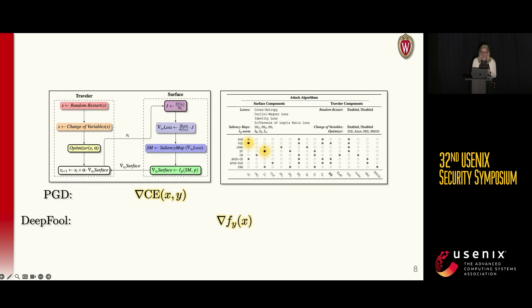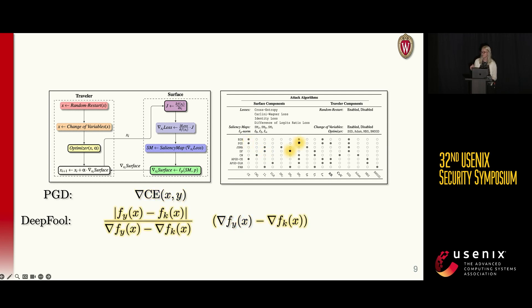Back to our PGD and DeepFool example. Beginning in the surface with the loss component, we see that PGD opts for the categorical cross-entropy loss and takes its gradients from the output of this loss function. DeepFool, on the other hand, doesn't use an explicit loss function, so we say that it optimizes over the identity loss. Instead, it takes the Y-truth component of the model Jacobian and operates on that directly. Moving down into the saliency map component in the surface, we see that PGD doesn't apply any special heuristics and just operates on its categorical cross-entropy gradients as is, while DeepFool applies a linear approximation of projection onto the decision boundary, which we call the DeepFool saliency map. PGD, since it doesn't do anything special, operates on the identity saliency map.